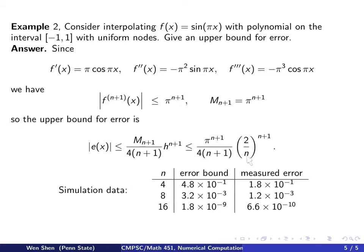And the second column here is the error bound, meaning the formula here, plugging in the corresponding n value and compute it. So we see for n equals to 4, that's 4.8 times 10 to the negative 1, and when n equals to 8, it's 3.2 times 10 to the negative 3, and for n equal to 16, it's 1.8 times 10 to the negative 9.